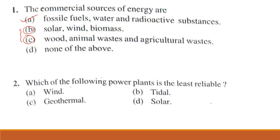Next problem. Which of the following power plants is the least reliable? Wind, tidal, geothermal, and solar. Wind power is not steady and unreliable. So the least reliable power plant is wind power plant.